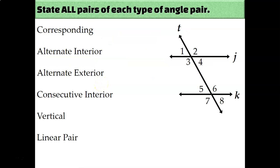Let's see if we can name all of the pairs of each type of angle. Pause the video and write down as many corresponding, alternate exterior, alternate interior, consecutive interior, vertical, and linear pair angles as you can.